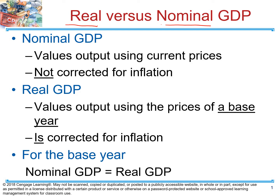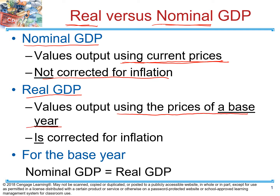Economists also calculate real and nominal GDP. When we calculate nominal GDP, we're taking into consideration current prices. So if we calculate GDP for year 2019, we're going to use prices of goods and services for that year. Therefore, nominal GDP is not corrected for inflation. When we calculate real GDP, we choose a certain base year and use prices of that base year. Therefore, real GDP is corrected for inflation.